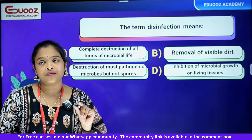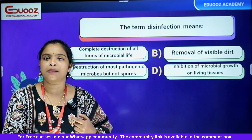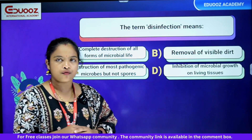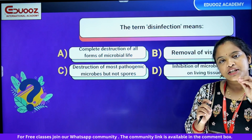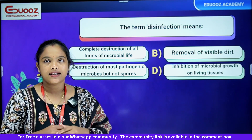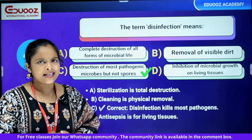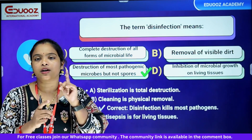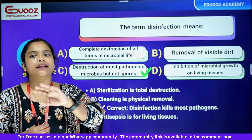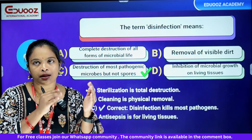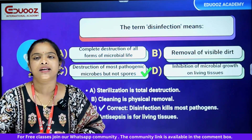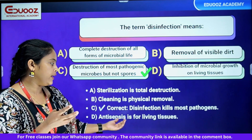The term disinfection means: complete destruction of all forms of microbial life, removal of visible dirt, destruction of most pathogenic microbes but not spores, or inhibition of microbial growth on living tissue. The term disinfection means option C — destruction of most pathogenic microbes but not spores. Complete destruction of all microbial life is sterilization. Removal of visible dirt is cleaning. Inhibition of microbial growth on living tissue is antisepsis.